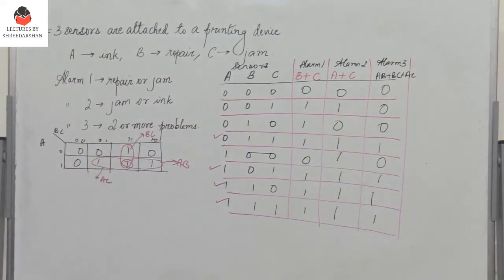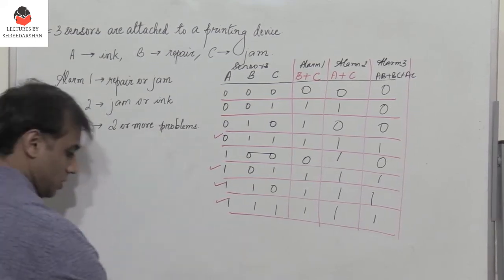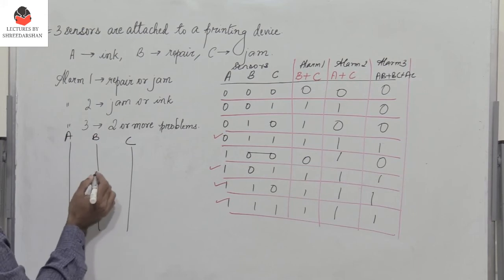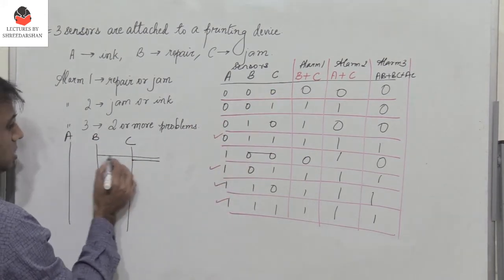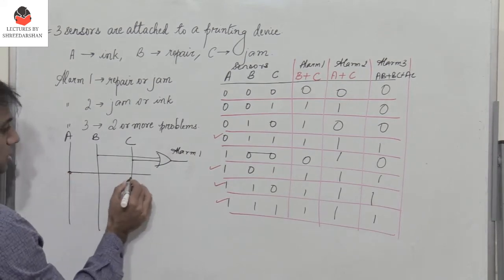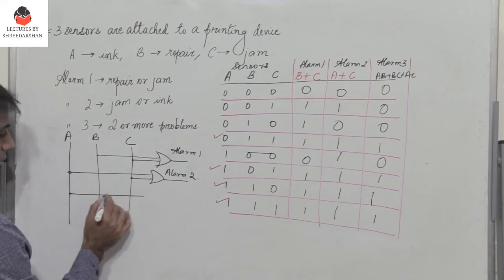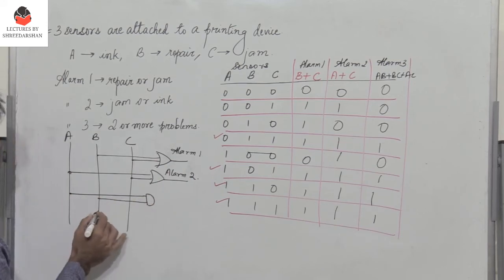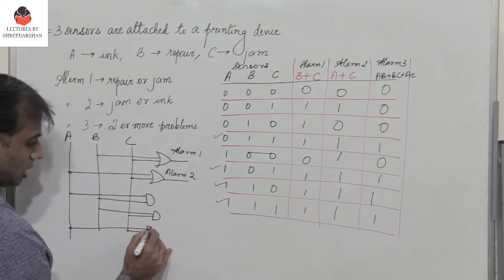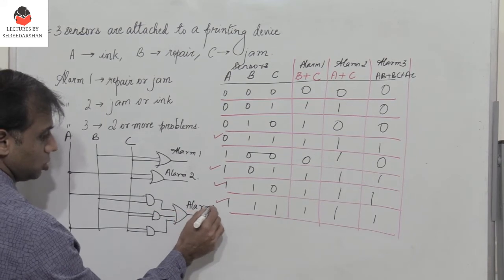The implementation is straightforward. We have three inputs A, B, and C drawn as three parallel lines. Alarm 1 is B plus C — pass B and C through an OR gate. Alarm 2 is A plus C — pass A and C through another OR gate. For alarm 3, pass A and B through an AND gate, B and C through another AND gate, and A and C through a third AND gate, then combine all three through a three-input OR gate to get alarm 3.